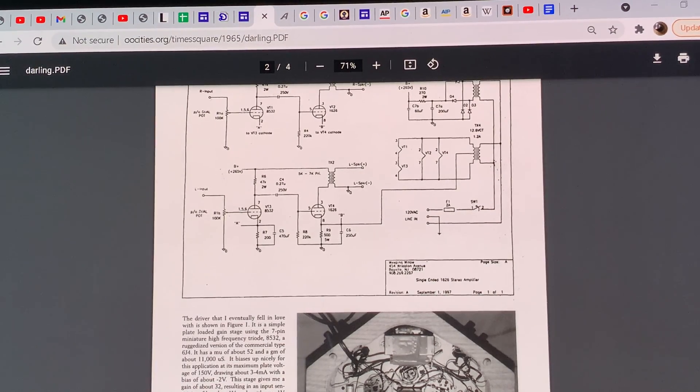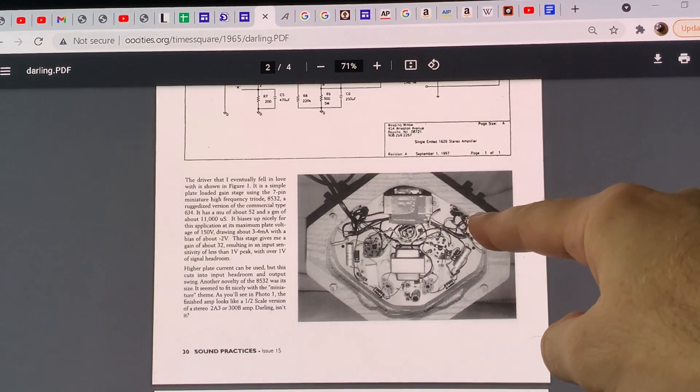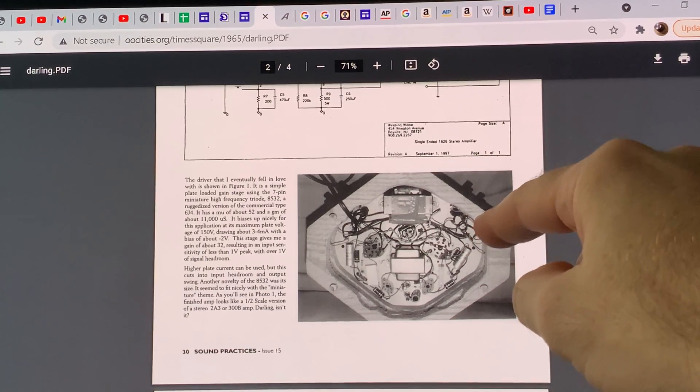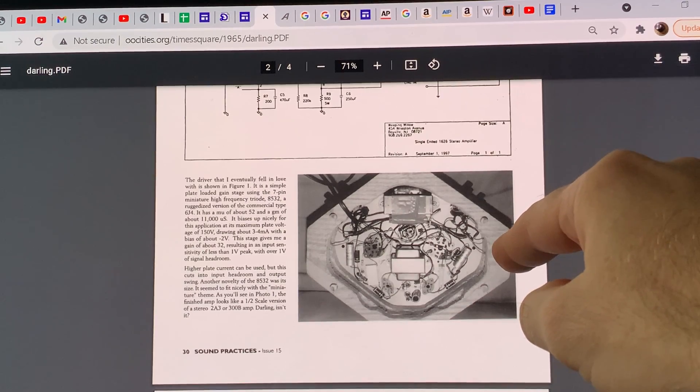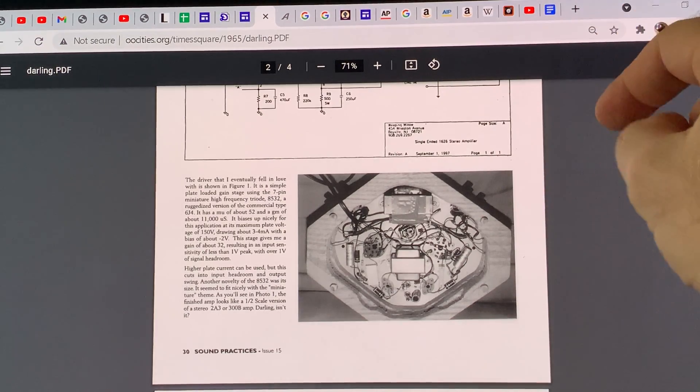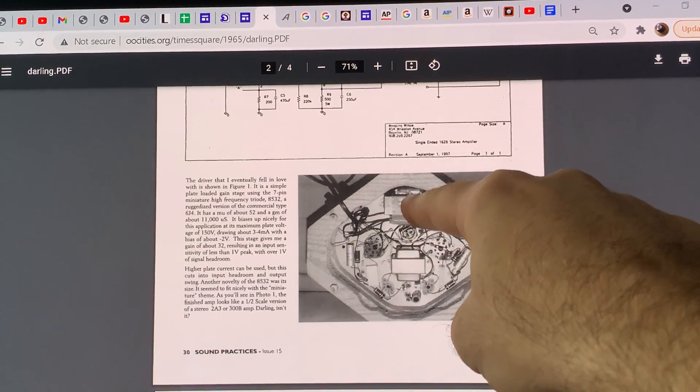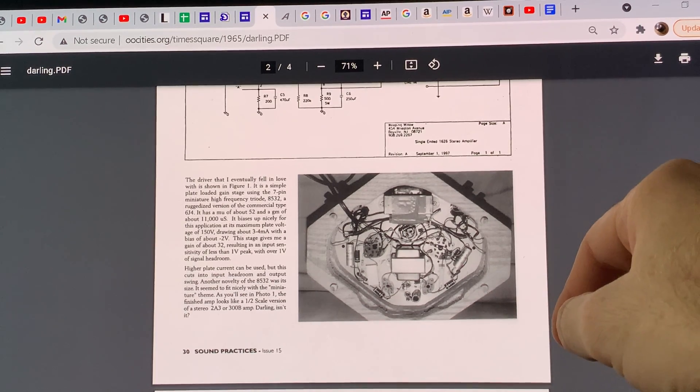but it gives you significantly improved results. So as you see, there's tremendous freedom, and this is just the single Darling that will give you less than one watt output power. However, if you build it with high quality output transformers, you use a choke in the power supply, and you use high quality filament transformer and power transformer,